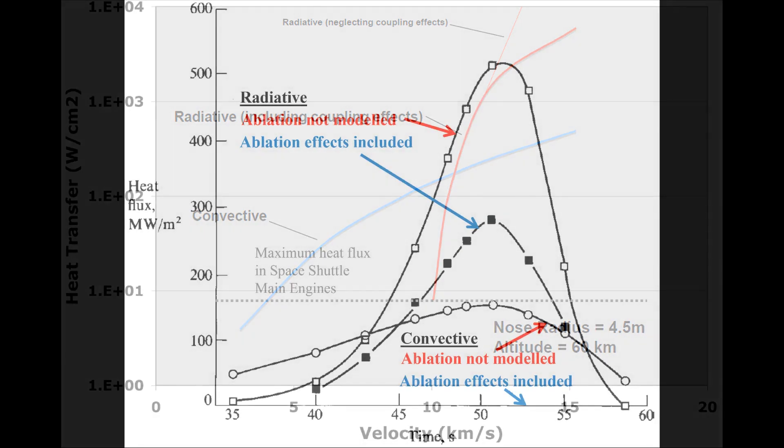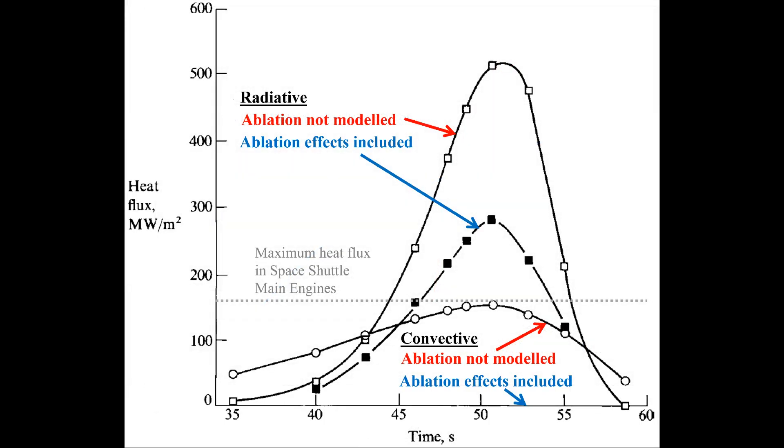The heating of the Galileo probe, which entered Jupiter's atmosphere at the ludicrous speed of 47 kilometers per second, was essentially 100% radiative. It should be pointed out that the convective heating of the body was negligible primarily because the rapid heat shield ablation output so much cooling gas that the post-shock gases could not even reach the vehicle's surface.